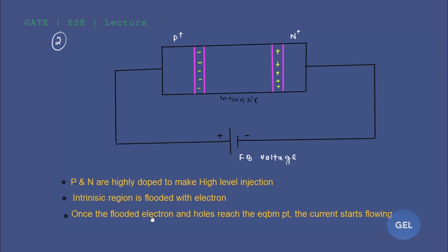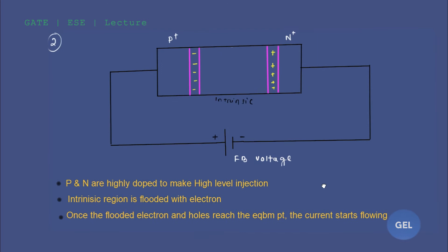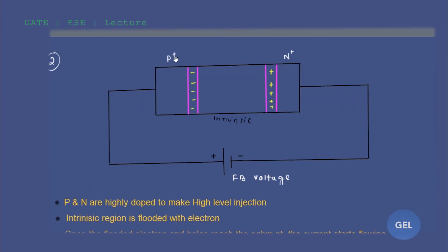Once the flooded electrons and holes reach the equilibrium point, the current starts flowing. The p-side is full of majority carriers and some minority carriers. But in the intrinsic region, we don't have such majority and minority — the carrier concentration is even smaller than the minority carriers on the p-side.